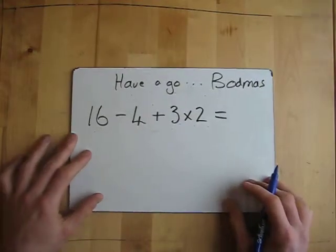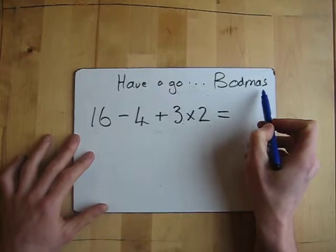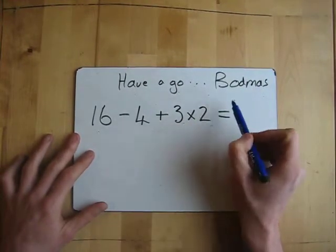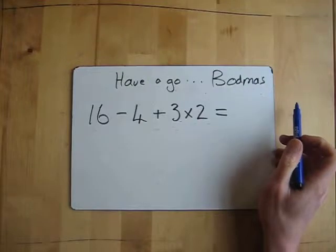Okay, one for you to have a go at. So again, BODMAS: brackets, order, divide, multiply, add, subtract. Now we've got a bit going on here. We've got a subtract and add and a multiply. So I'm going to have a little go. I'm going to go through the answer. Pause this and I'm going to go through the answers and wait three seconds.